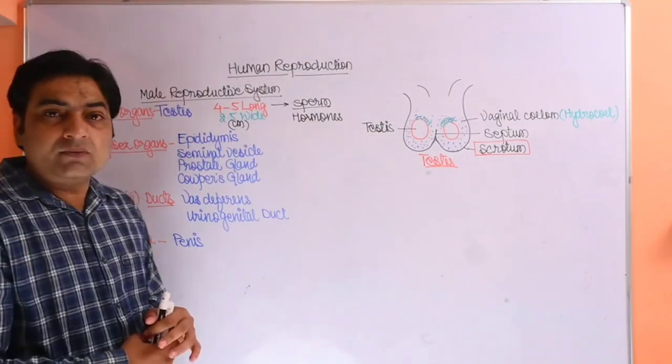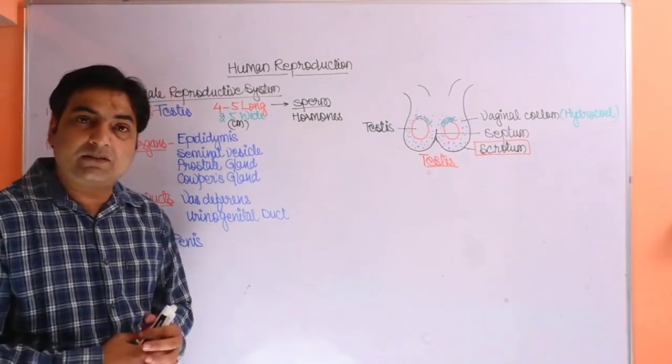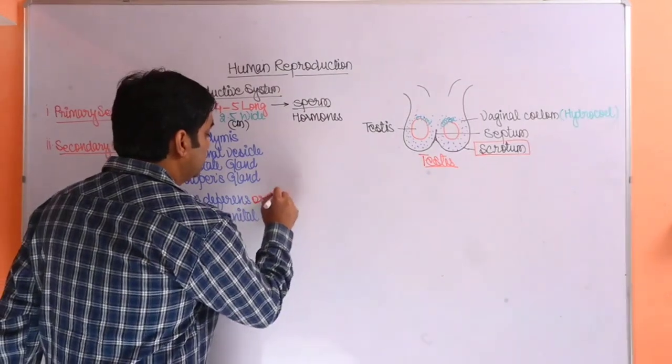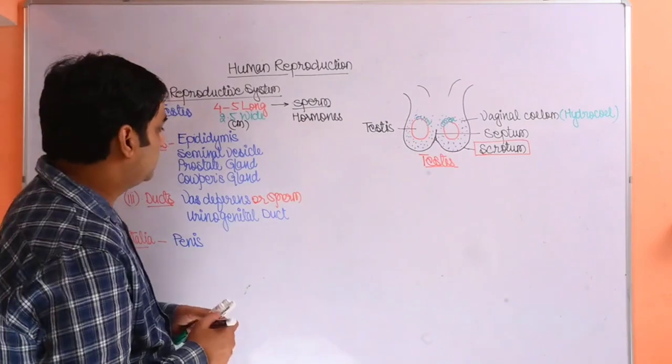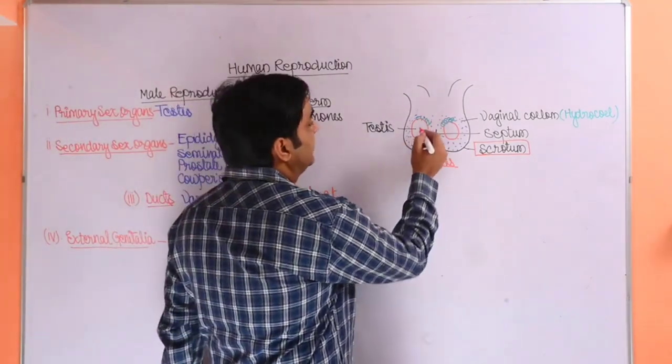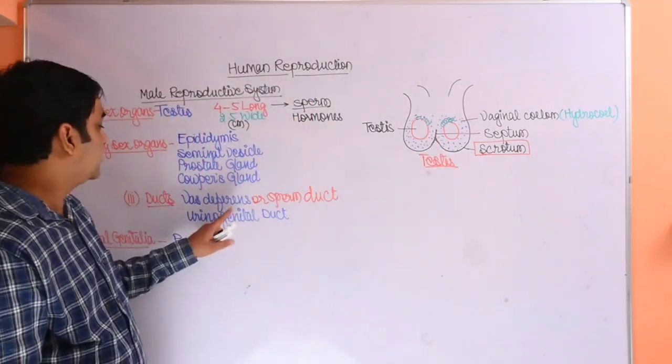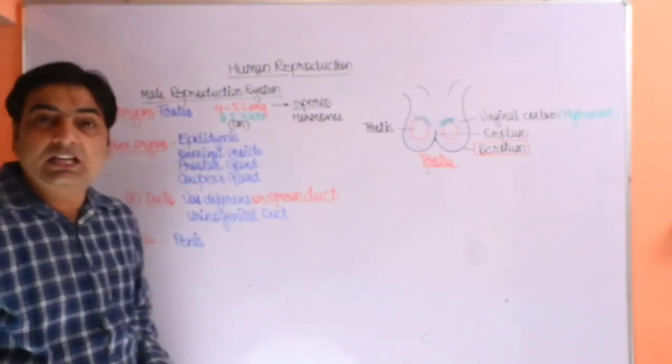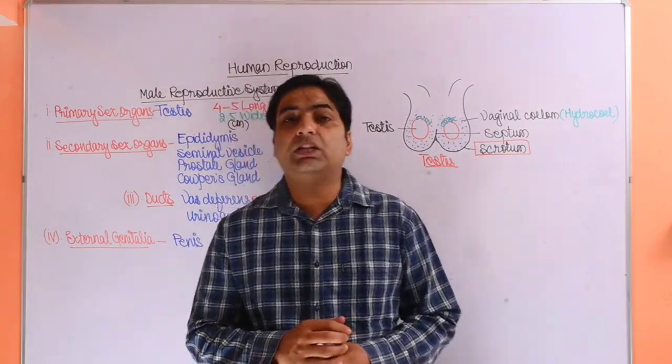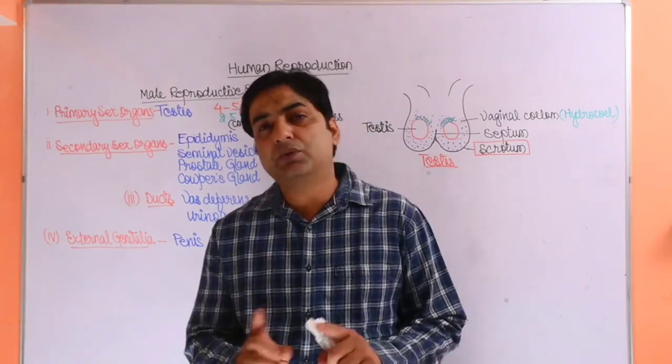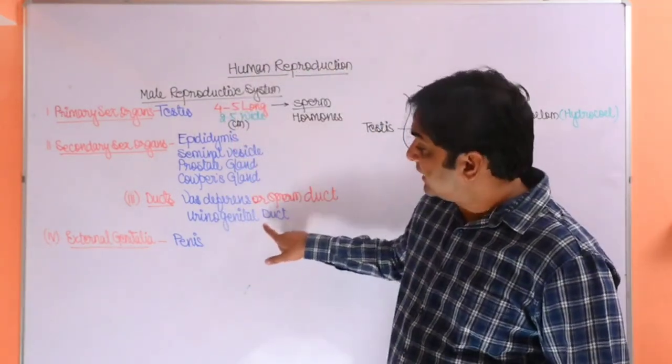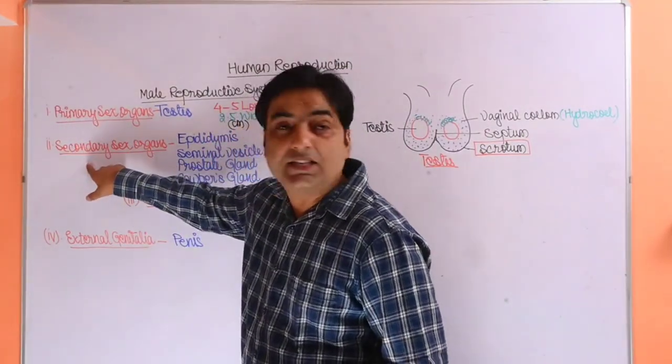The third is ducts. Two types of ducts are present in male reproductive system. Vas deferens is also called sperm duct which carries the sperm from testes to penis. The next is urinogenital duct. Males have a very specific feature that the ejaculation of sperm and urine use the same path. So there is a common path for sperm and urination called urinogenital duct.